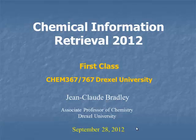Welcome to Chemical Information Retrieval. The basic idea of this class is that by the time you're done with it, you should be able to find pretty much any chemical information you're looking for, and you should be able to communicate what you find to other chemists. That sounds like it should be easy, but it actually isn't — there are a lot of potholes in this process, and that's really what we're going to step through.